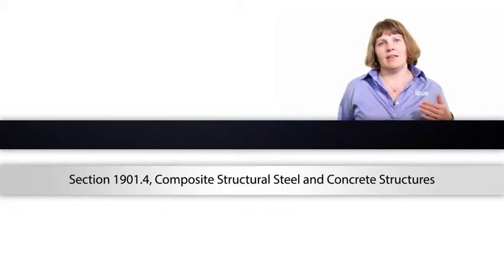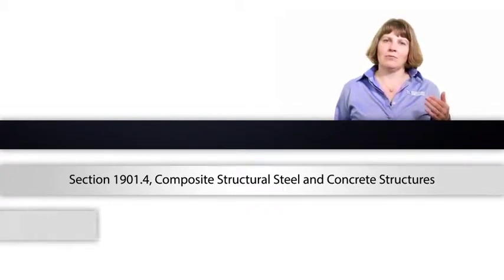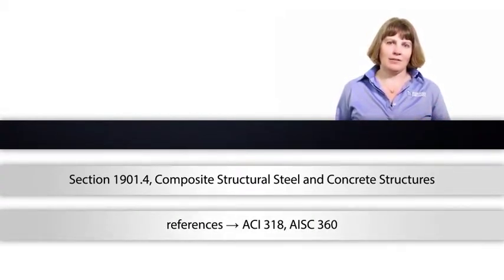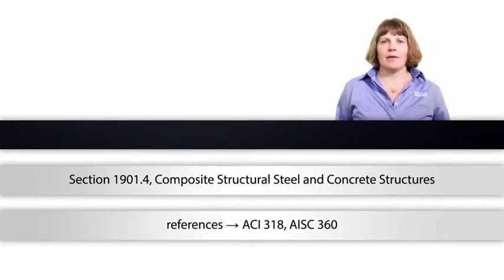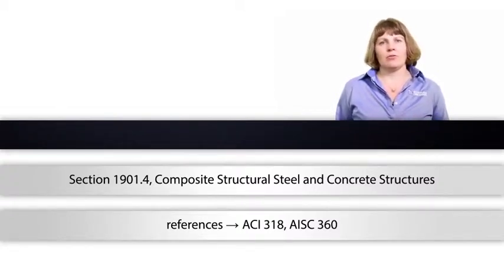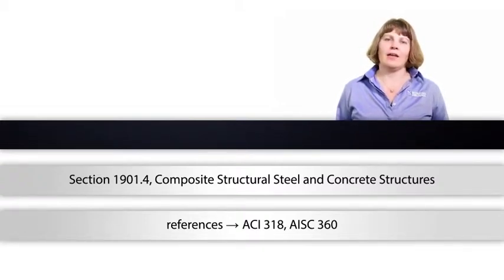And in fact, this new section again references to ACI 318 and AISC 360 for steel. So similarly, the 2012 IBC Section 1912, Concrete Filled Pipe Columns has been deleted.